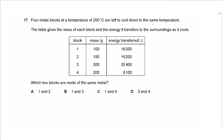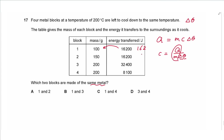Question 17: Four metal blocks at 200°C are cooled to the same temperature. Same metal means same specific heat capacity. Using c = Q / (m × ΔT) and since ΔT is the same for all, we calculate the ratio of energy to mass for each block: block 1 gives 162, block 2 gives 108, block 3 gives 162, block 4 gives 40.5. Blocks 1 and 3 match, so the answer is B.